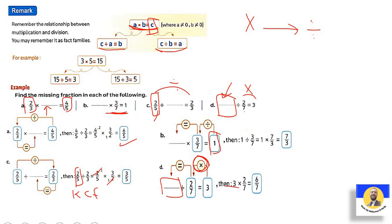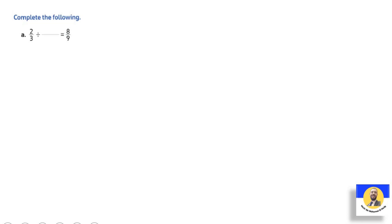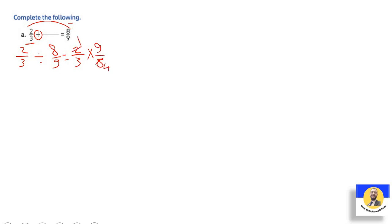Complete the following: two-thirds divided by what equals eight-ninths. The first number is present and it's division, so divide: two-thirds divided by eight-ninths. Use KCF: two-thirds times nine-eighths. Simplify: two and eight divided by two give one and four; three and nine divided by three give one and three. Answer: three-quarters.